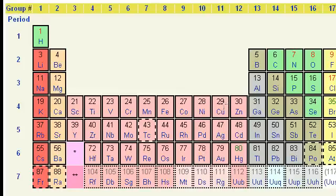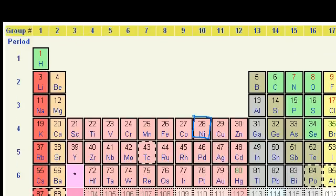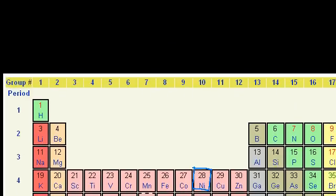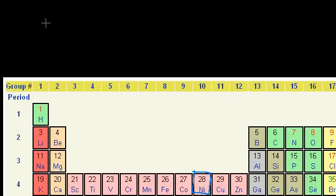Let's figure out the electron configuration for nickel, right there. 28 electrons. We just have to figure out what shells and orbitals they go in.